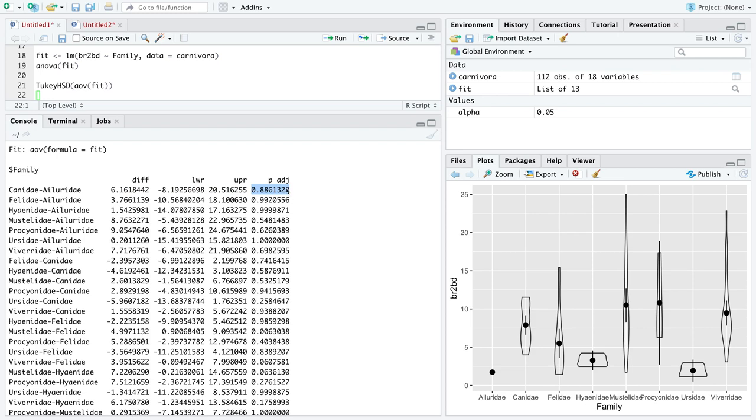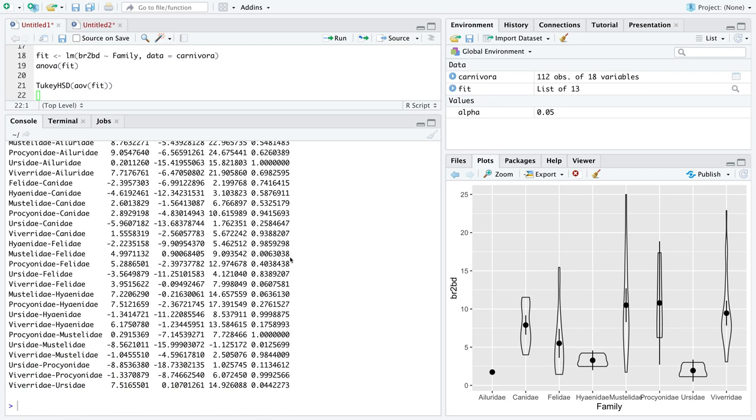Because the p-values are adjusted to take into account this family-wise error rate issue, you can essentially just scroll your eyes down this list and figure out which of these pairwise comparisons has evidence of difference. For instance, where did it just go? This one right here. Based on the data, there appears to be evidence that the difference between Mustelidae, that's this one, and Felidae, that's this one, are different, with a p-value of 0.006, which is certainly less than a level of significance of 0.05. That's essentially saying that Mustelidae appears to be different than Felidae.